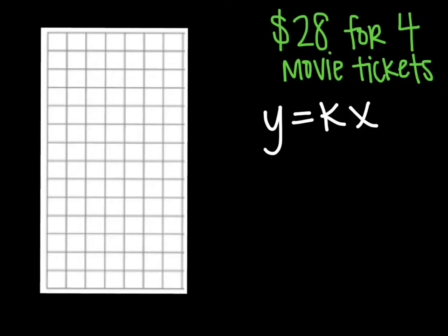k we know is many different things. The one thing we know is that it's slope, it is rate, it is unit rate, it is y over x. So we can find our unit rate. Alright, so $28 divided by 4 tickets will give me 1 ticket being $7.